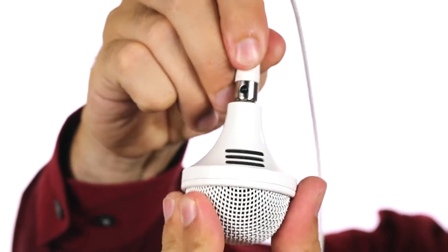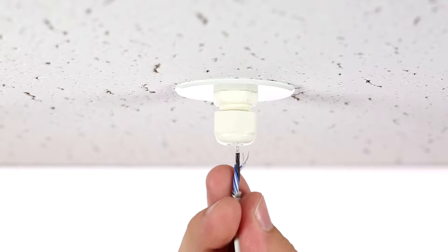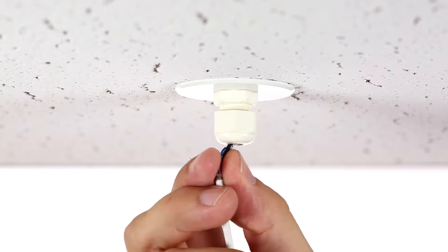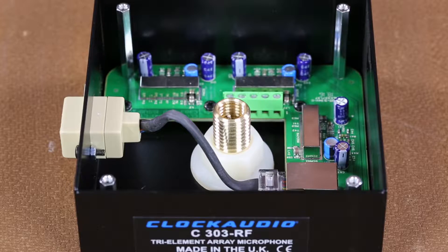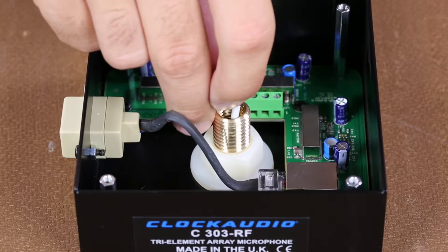Connect the tri-element microphone array to the tiny Q connector on the end of the microphone cable. Pass the un-terminated end of the cable through the ceiling grommet and set the desired length.